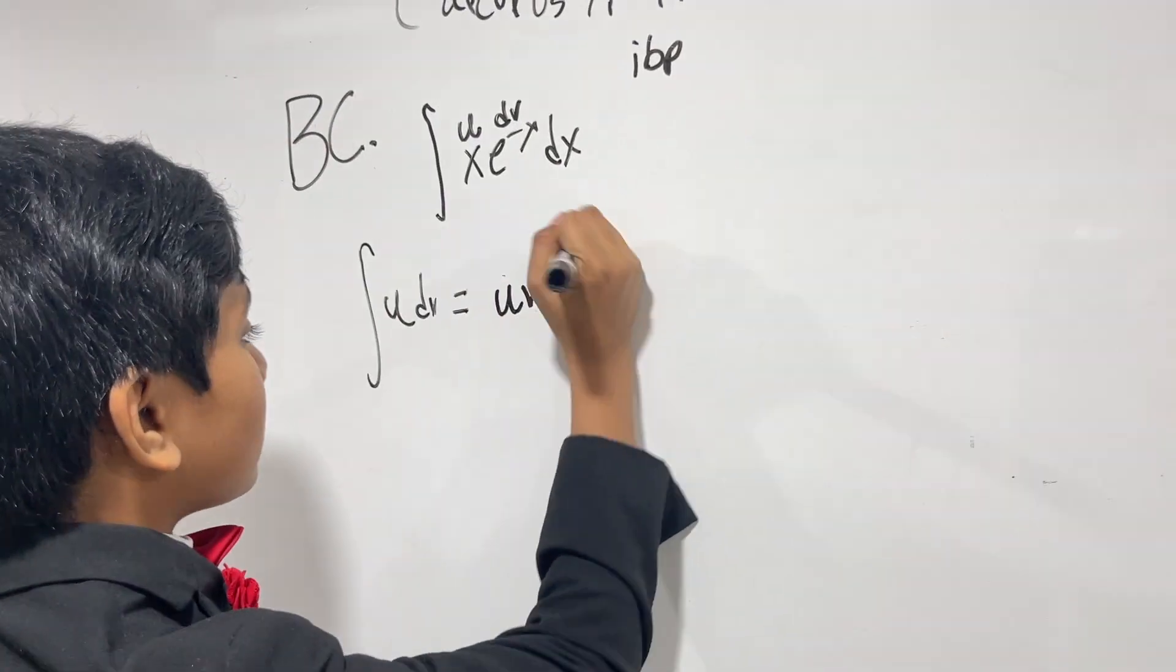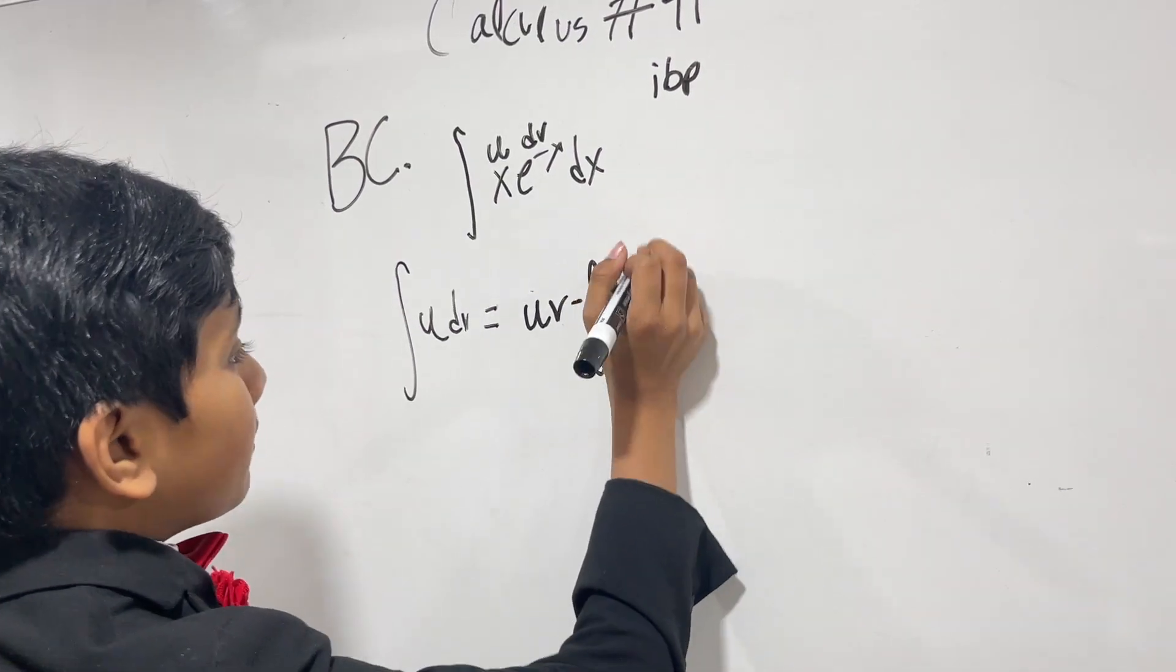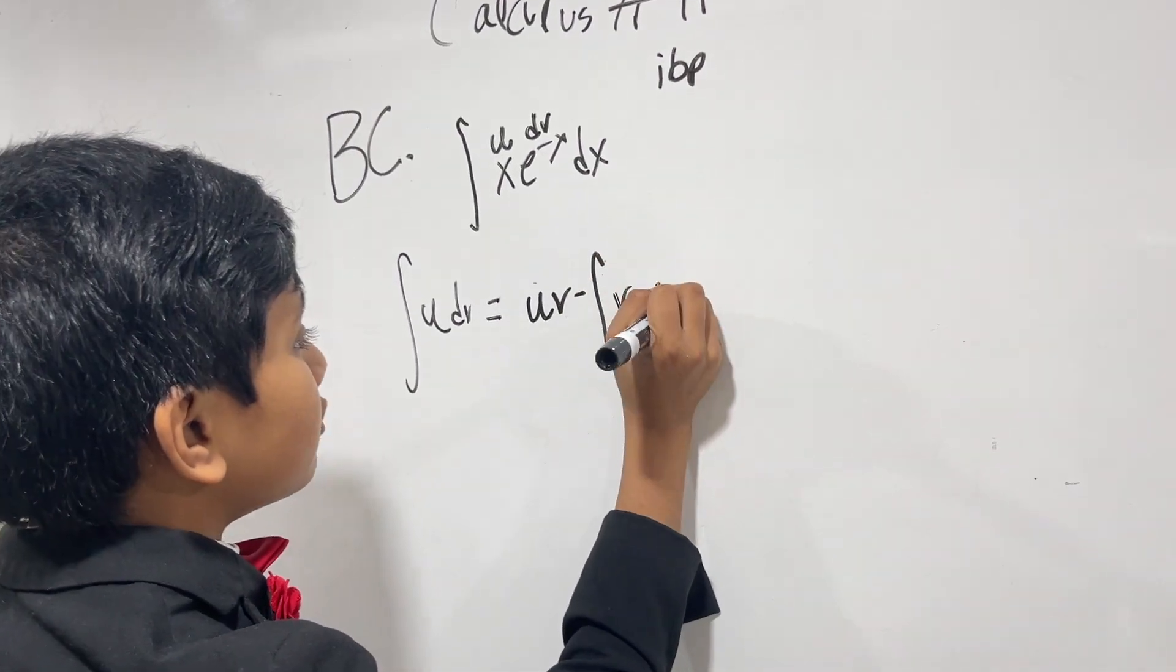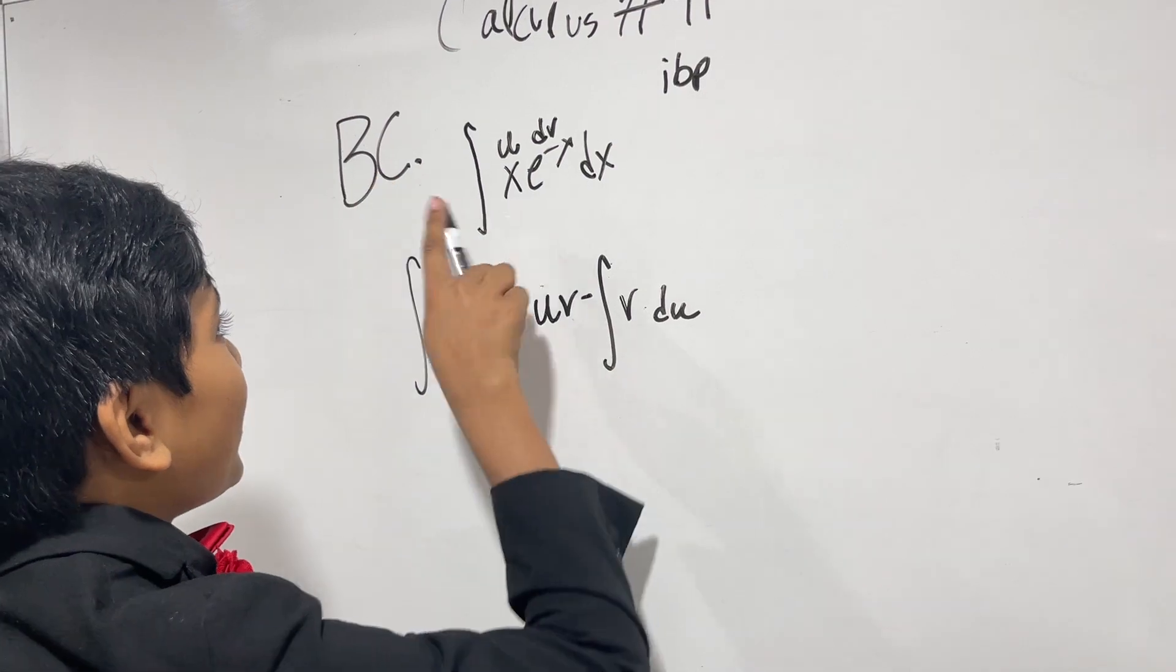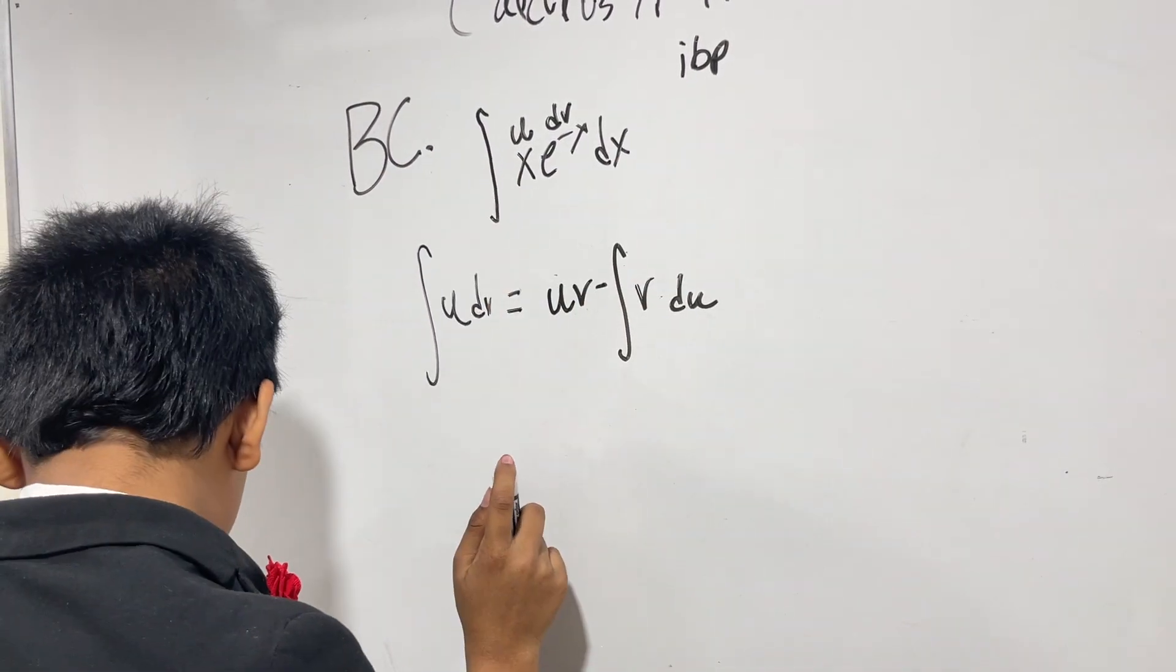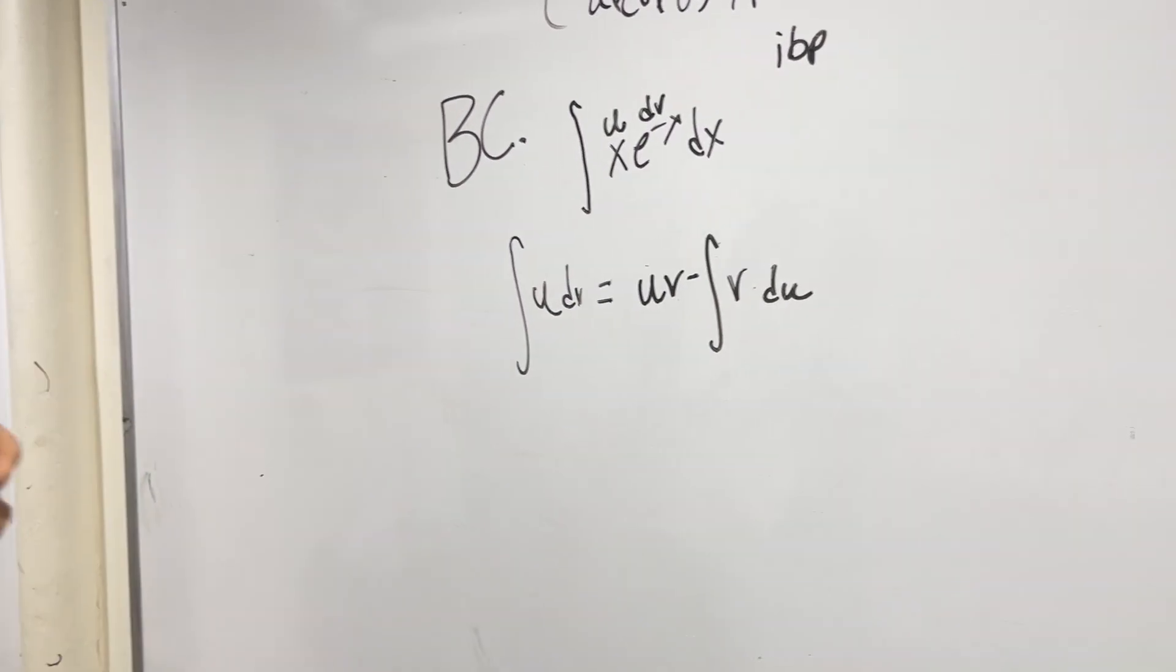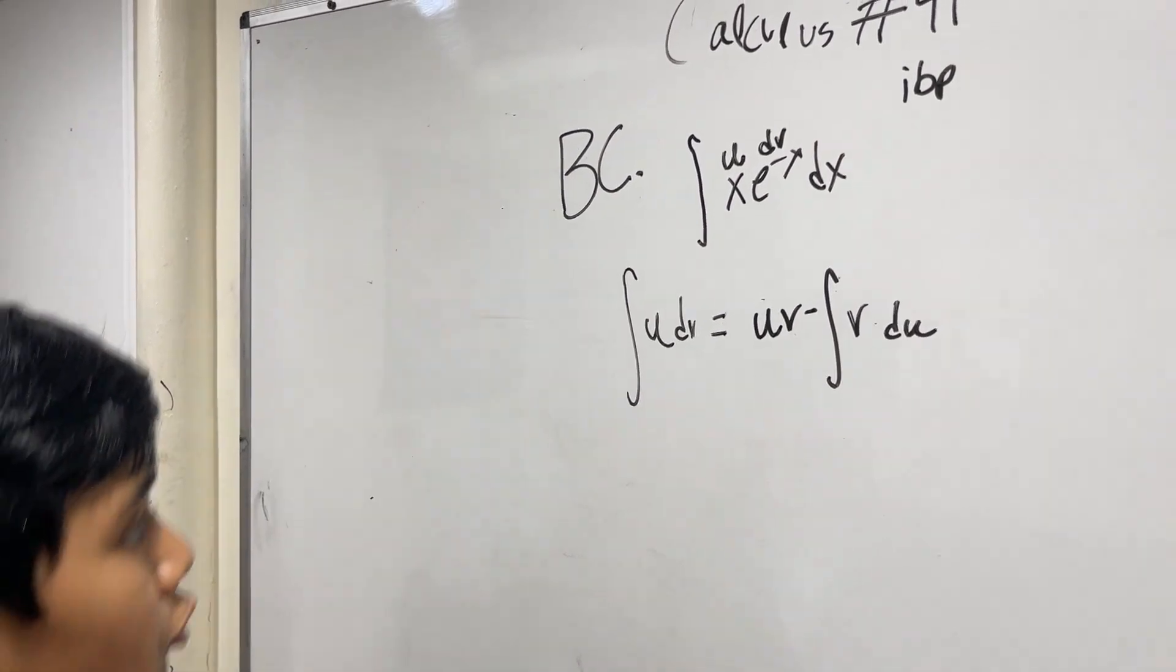So, we know that the integral of UDV equals UV minus the integral of VDU. So, we picked out U and we picked out DV. So, now let's get to work.